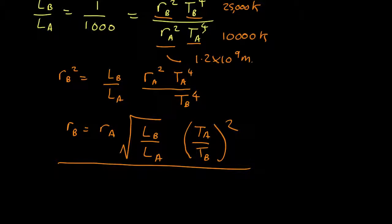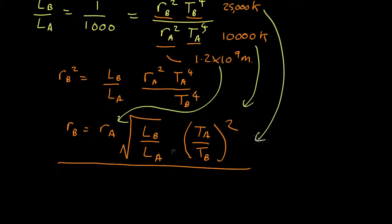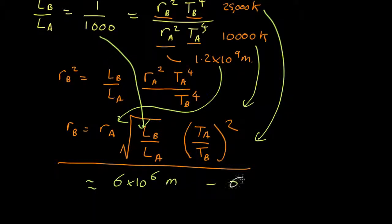Now, we can substitute the numbers in. So, we know r_A, we know the two temperatures, and we know the ratio of the luminosities, and this comes out as about 6 × 10⁶ meters, which is 6,000 kilometers.